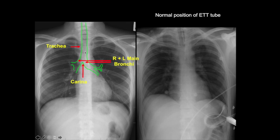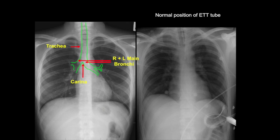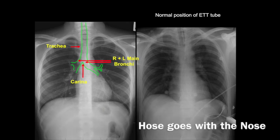This is an outline of the trachea, the carina, right and left main stem bronchus. The endotracheal tube should be five to seven centimeters proximal from the carina. If the patient flexes or extends their neck, the position of the endotracheal tube will change. If they flex their neck or put their chin down, the tube moves down. If they extend their neck or move their chin up, the tube moves up. The way you remember that is: the hose goes with the nose.